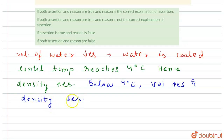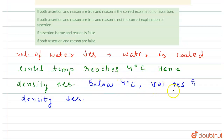So the volume of water decreases when water is cooled from room temperature until its temperature reaches four degrees Celsius. Below four degrees Celsius, the volume increases and therefore the density decreases.